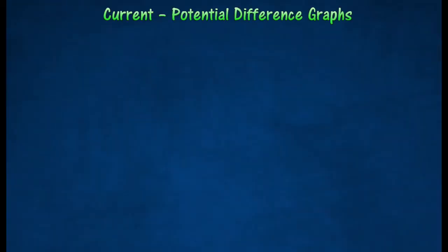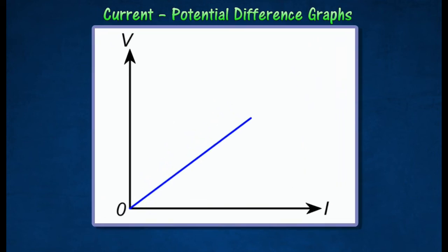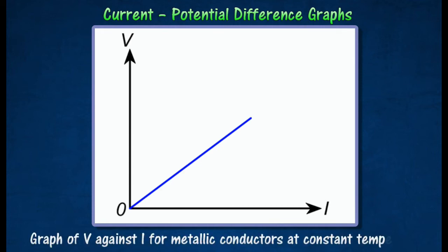Current potential difference graphs are used to show how the current through a component varies with the potential difference across it. Since V is directly proportional, the graph of V against I is a straight line through the origin.